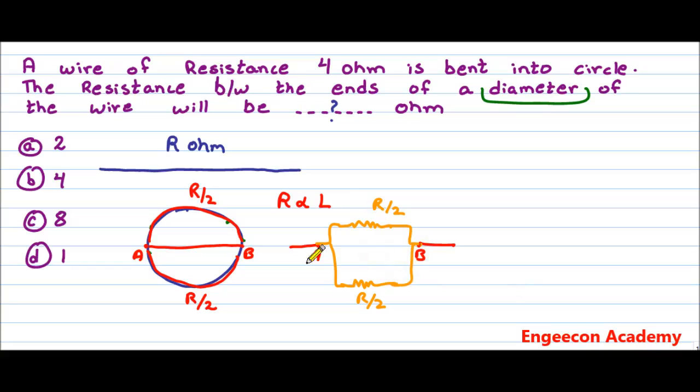So both resistances are in parallel combination. The equivalent resistance can be calculated as 1/R_equivalent equals 1/R1 plus 1/R2 and so on.